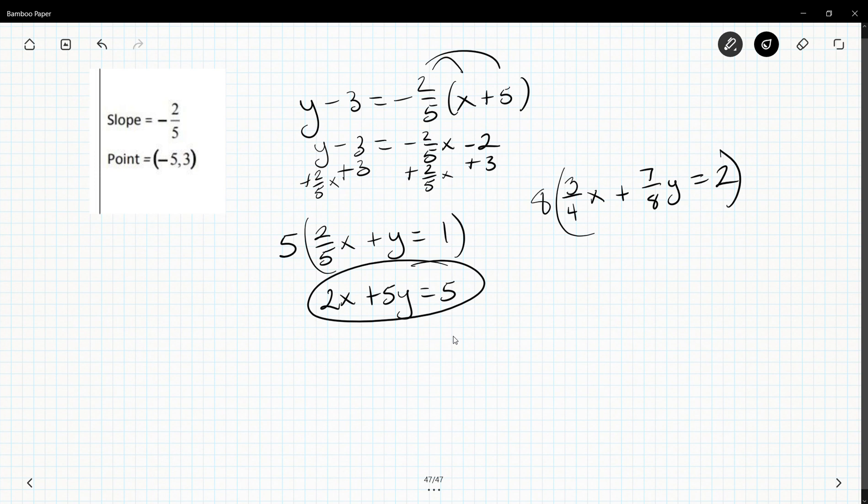8 times 3/4, this would technically become 1 and 2, so 2 times 3 would be 6x. 8 times 7/8 is 7y, and 8 times 2 is 16.